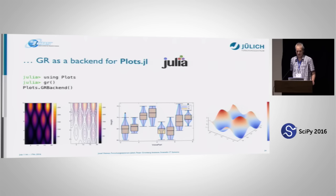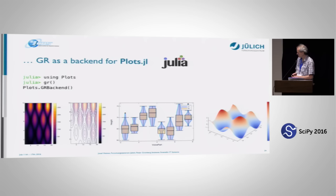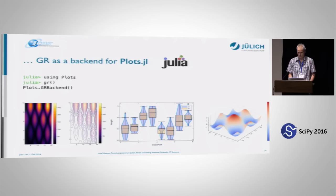There are other programs using the GR framework, for example a molecular dynamics program called PyMoldin, which we use to visualize vacancies or cavities in phase change materials. It is a complex program completely written in Python with a lot of computing in C, but the visualization is completely written in Python. We also have a backend for Plots, the most popular plotting software in the Julia world, and users say the plots produced are much faster than other packages in the Julia plotting environment.